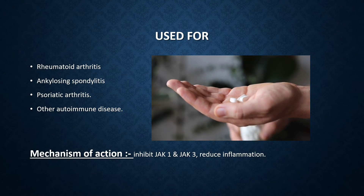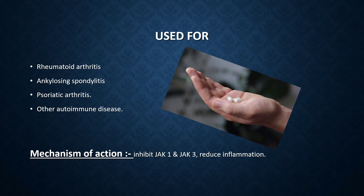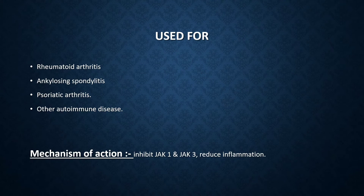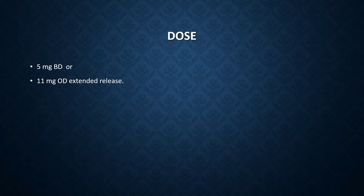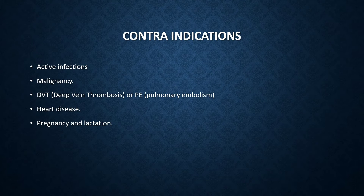It acts by inhibiting Janus kinase 1 and Janus kinase 3, by which it reduces the inflammation in the body. The dose of Tofacitinib is 5 mg BD or 11 mg OD extended release.